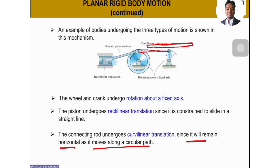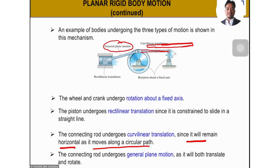So we have rotation, translation, and also general plane motion. The middle connecting rod undergoes a combination of rotation and translation, which we call general plane motion. So you can identify the type of motion for each component.